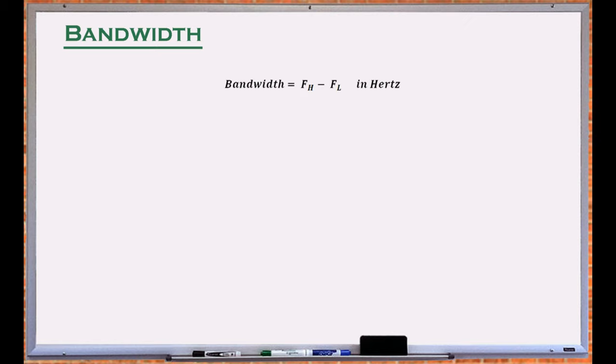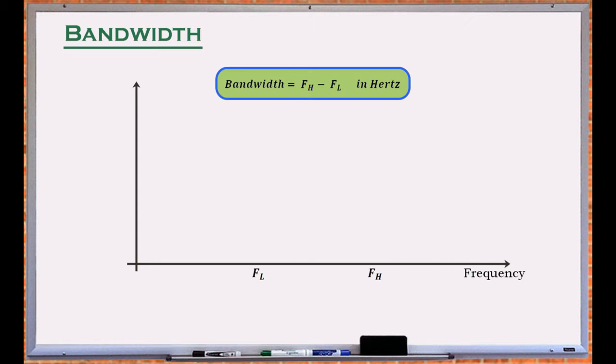In analog signal processing, bandwidth is the difference between two frequencies at the lower and upper boundaries of a continuous set. It is typically quantified in Hertz. Bandwidth specifies a medium's ability to process various frequencies.